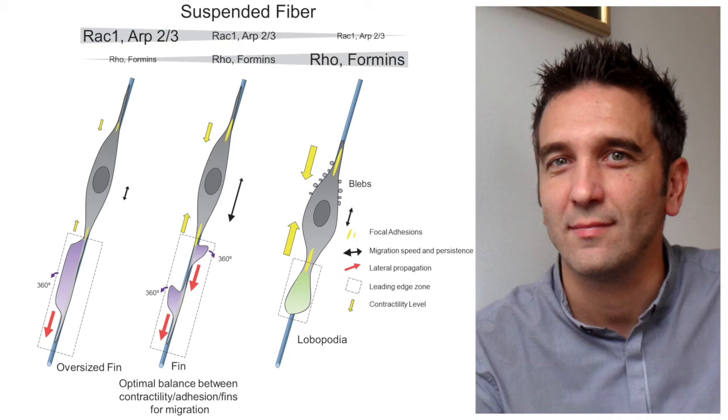When cells encounter a very dense environment, they may become stuck, change their behavior, and start to contract very strongly. By contracting they expand lobopodia that push the matrix away and open larger pores. Then if they encounter a new fiber, they shift again and restart migrating with the fin. In a very confined environment, cells may need to both push on the environment and send protrusions to lead the way.